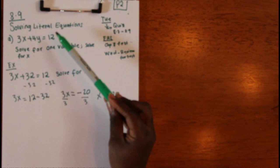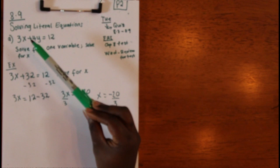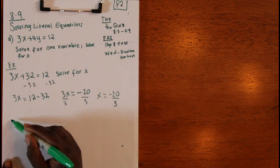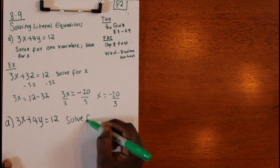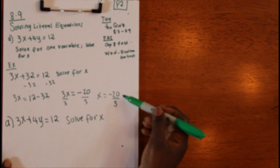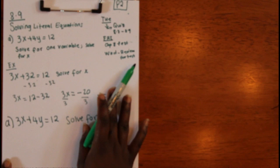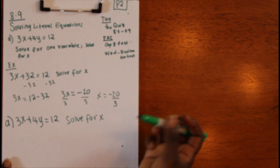Now with two variables, what happens is the variable you're solving for ends up on one side, and all the other variables go on the other side. Treat it just like a regular linear equation — the other variable just stays on the other side. Your answer at the end needs to say X equals whatever else, including that Y.